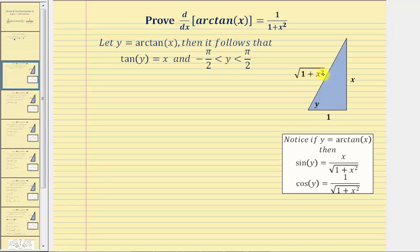One important thing to recognize when using this triangle to model angle y, given tangent y equals x: if angle y is in the first quadrant, the tangent function value would be positive, so x would be positive. But if angle y is in the fourth quadrant, the tangent function value would be negative, and x would be negative.